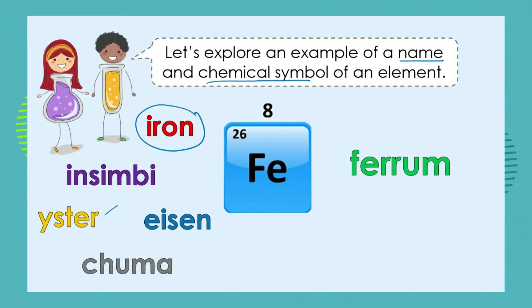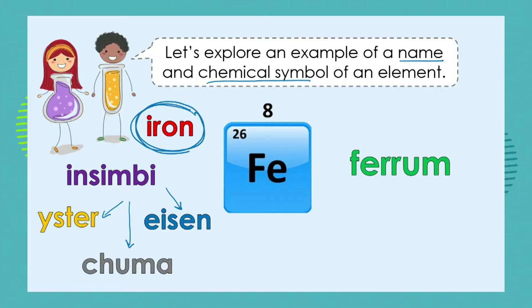This particular element is the one we know in English as iron. If we were talking isiZulu, we would call it Insimbi. If we were talking Afrikaans, we would refer to it as Yster. If talking in German, I would refer to it as Eisen. And if talking in Swahili, I would call it Chuma. So we can see that different countries and different languages refer to what we in English call iron using all of these different names, which could be quite confusing to scientists at a scientific conference.